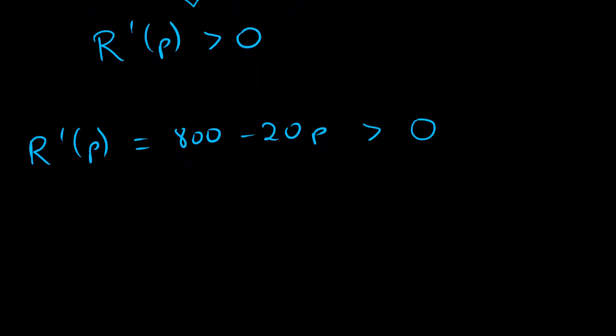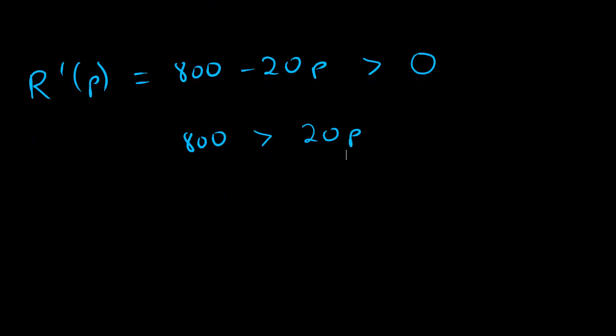And solving inequalities is not so bad. You just got to make sure that you flip the inequality if you divide by a negative or some crap. But we're not even going to do that here. Let's add 20p on both sides. So we get 800 is greater than 20p. And then let's divide by 20. 800 divided by 20 is 40.